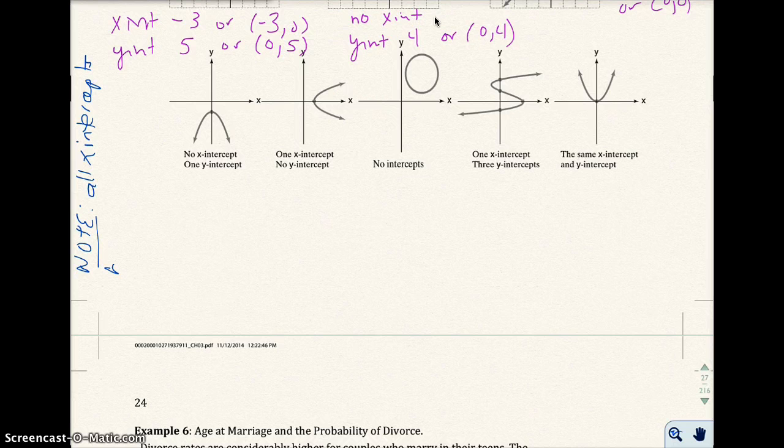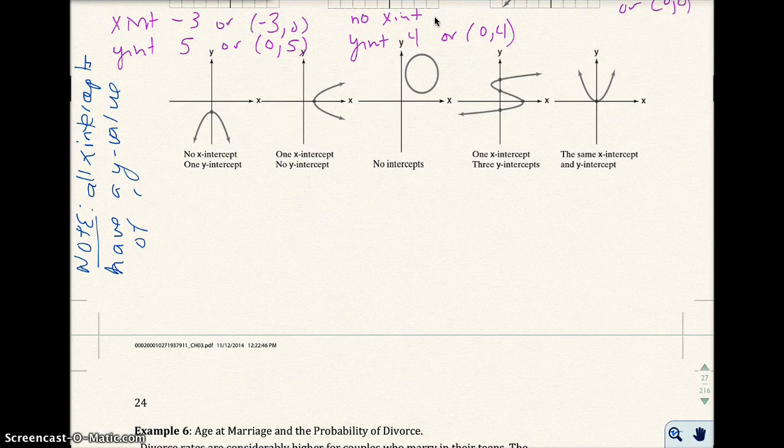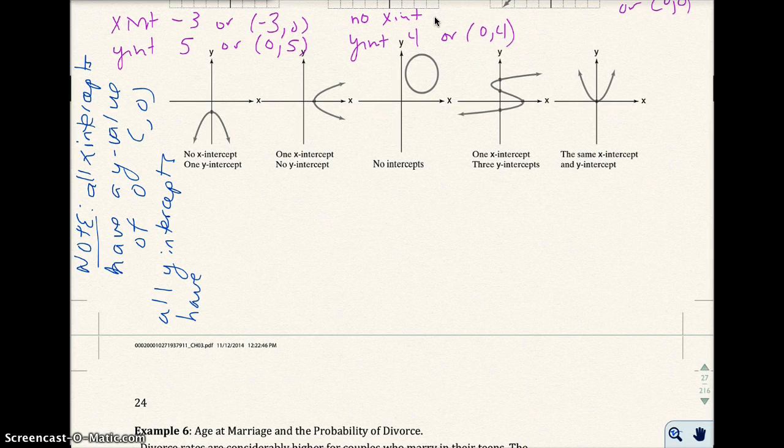will have a y-value of 0, all y-intercepts have an x-value, I'm writing this sideways, sorry, an x-value of 0, so you have 0 something, okay?